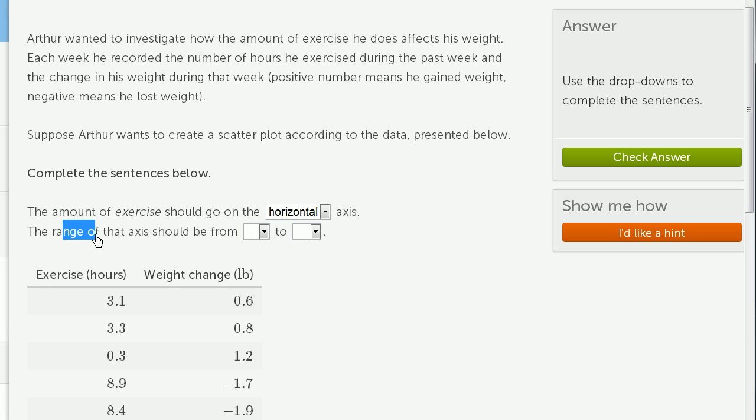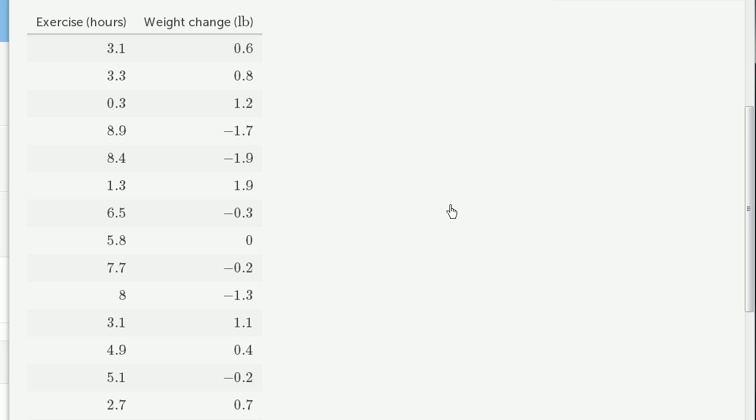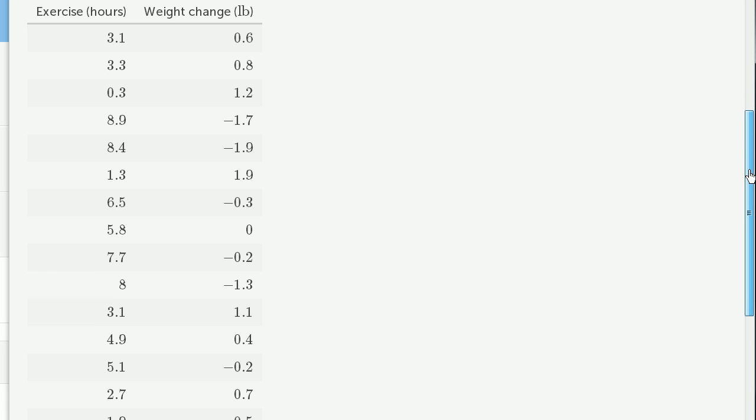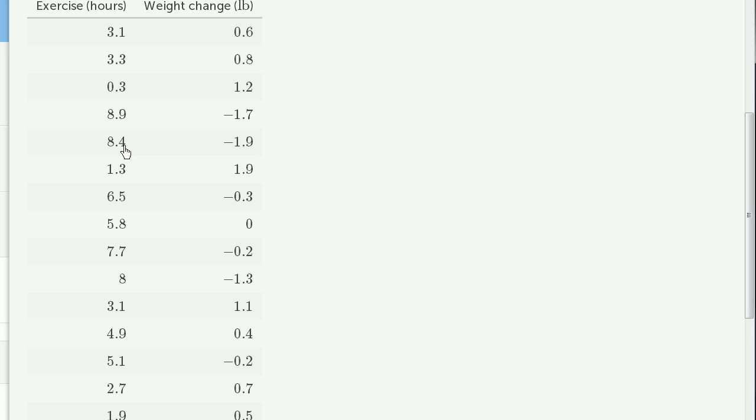The range of that axis should be from... well, we just have to see what his range of exercise is over this investigation. Let's see. His largest amount of exercise in hours is 8.9. That looks like the largest amount. And what's the smallest amount of exercise he performs? It looks like 0.3 is the smallest amount of exercise.